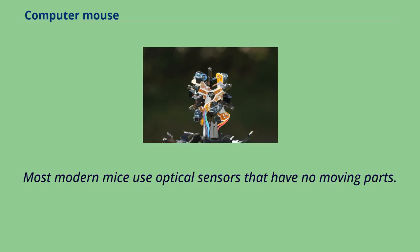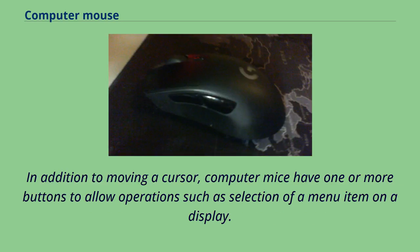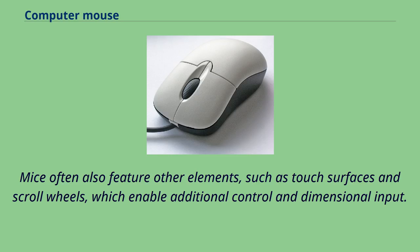Most modern mice use optical sensors that have no moving parts. Though originally all mice were connected to a computer by a cable, some modern mice are cordless, relying on short-range radio communication. In addition to moving a cursor, computer mice have one or more buttons for operations such as selection of a menu item, and often feature touch surfaces and scroll wheels for additional control.